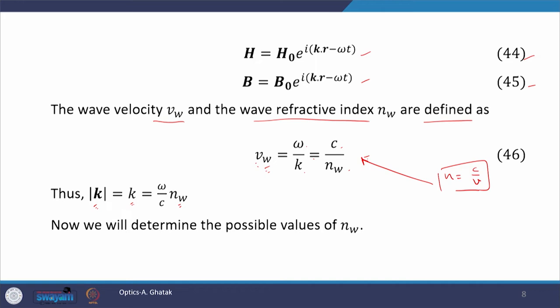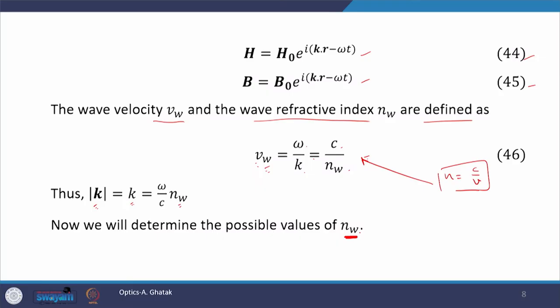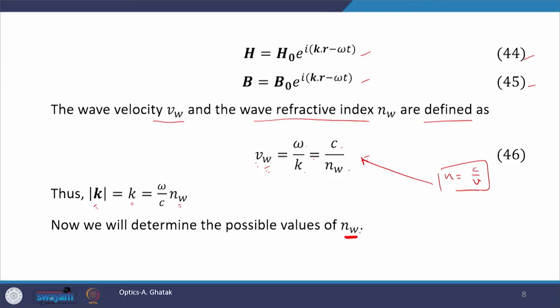Now we will determine the possible values of nw — what are the possible values of the wave refractive index in a birefringent crystal. Since the medium is dielectric, from the first Maxwell equation we get divergence of D equals 0, where we have assumed that the charge density is 0. In component form, equation 47 can be written as equation number 48.